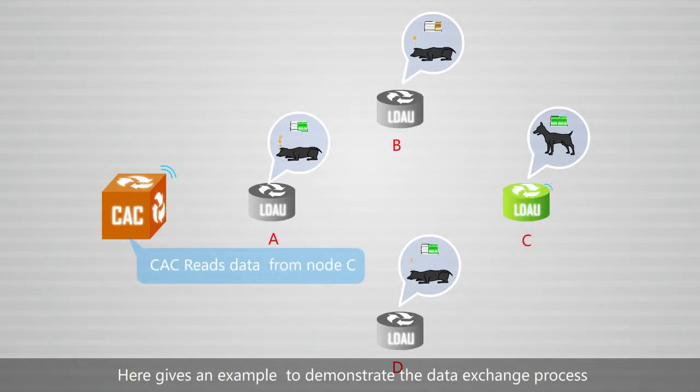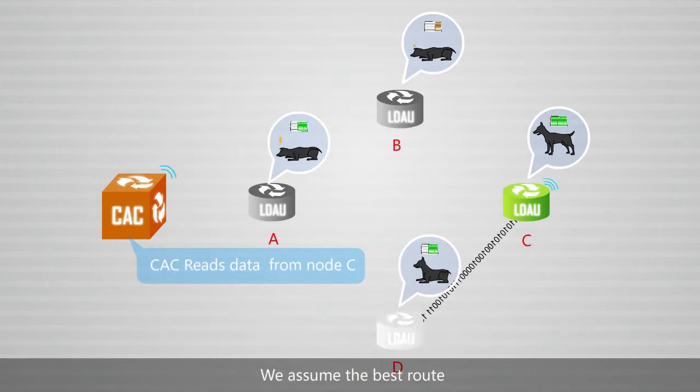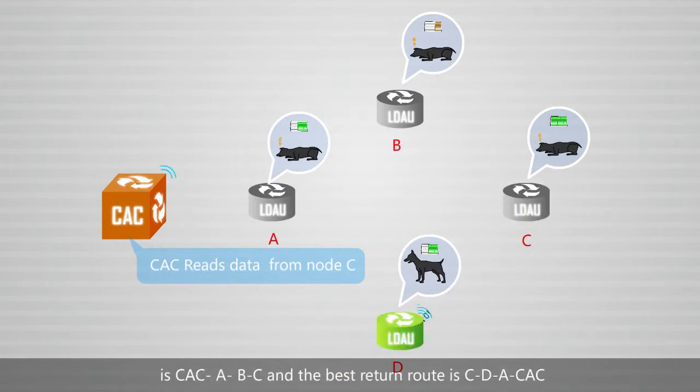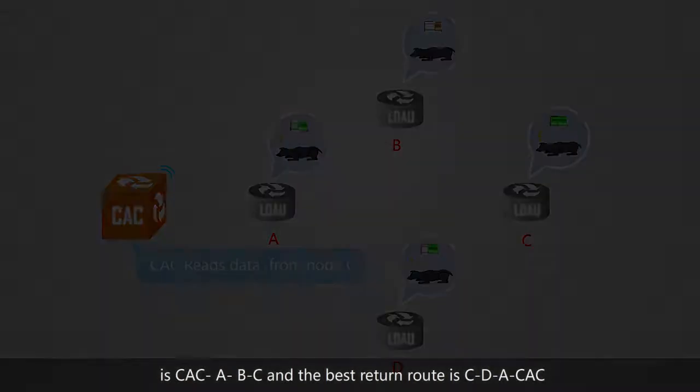Here gives an example to demonstrate the data exchange process between CAC and node C. We assume the best route is CAC to A to B to C and the best return route is C to D to A to CAC.